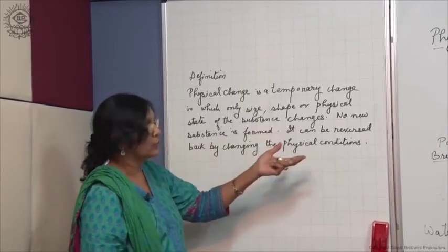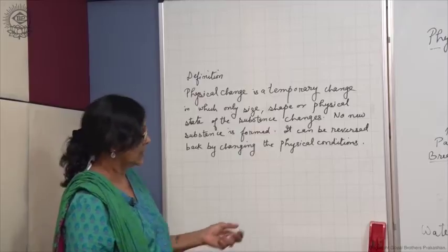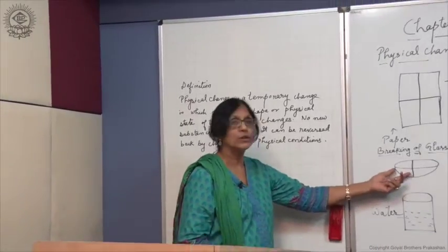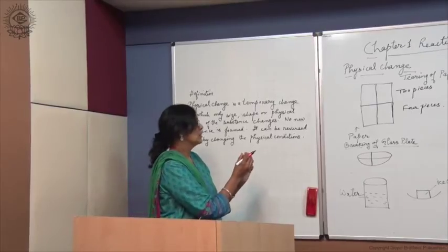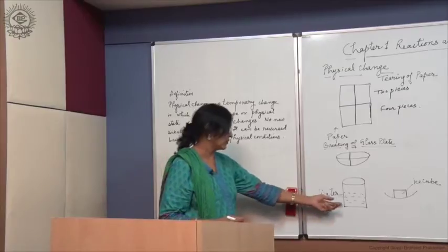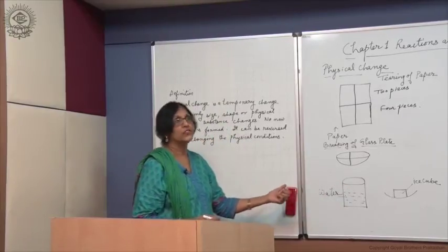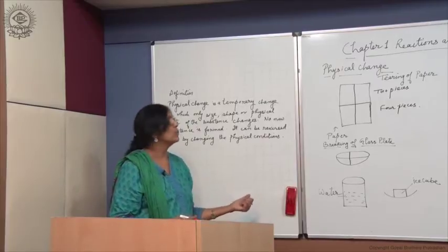It can be reversed back also by changing the physical conditions. In the case of glass plate also, we can use glue to paste the two pieces of the glass plate. And the same way, the change can be reversed back. Ice can be converted back to water.